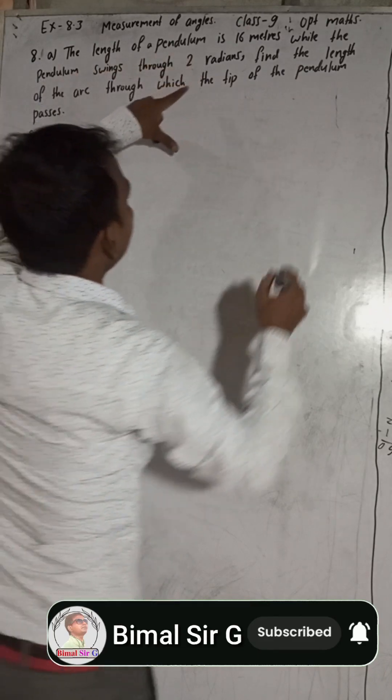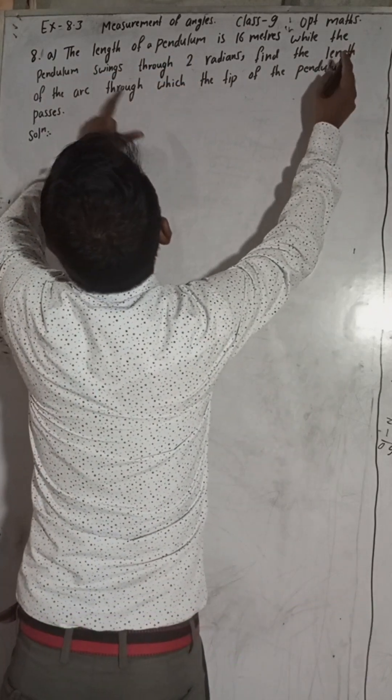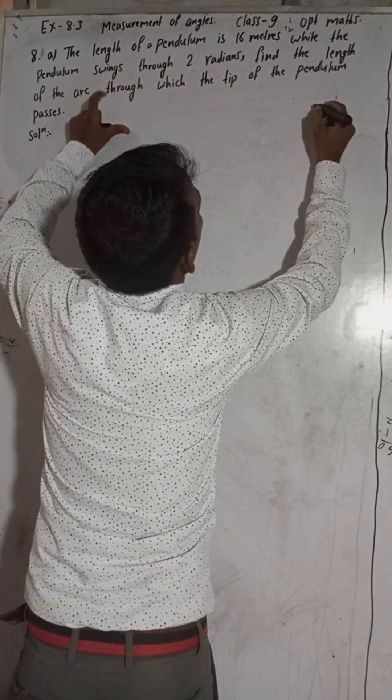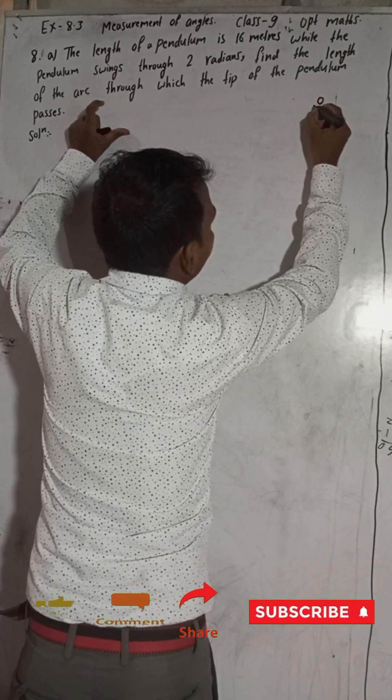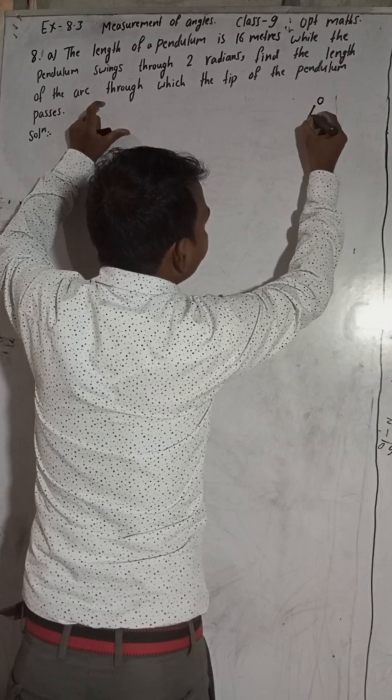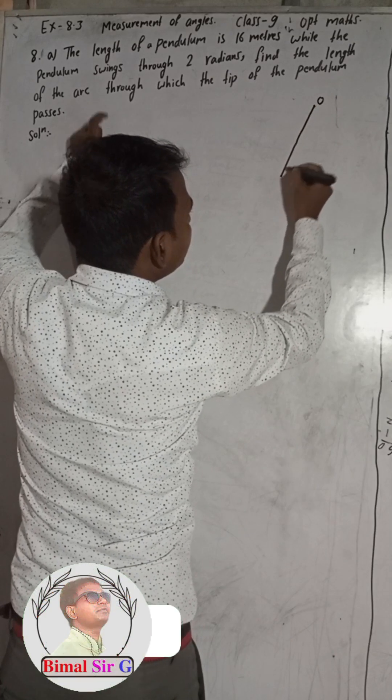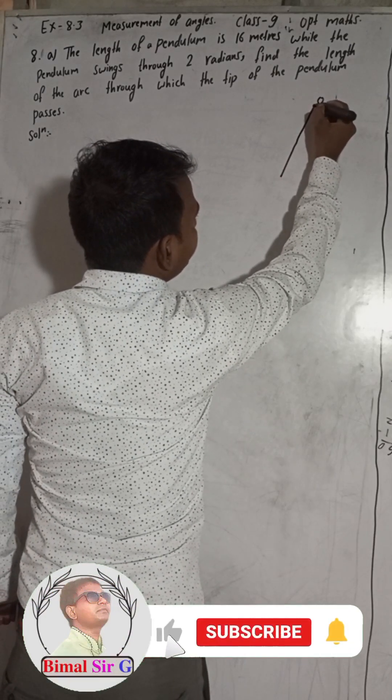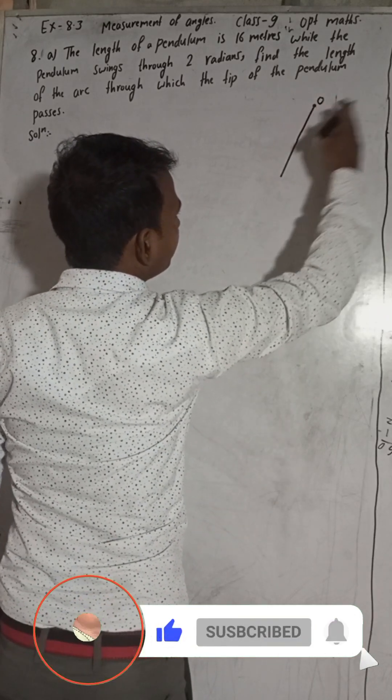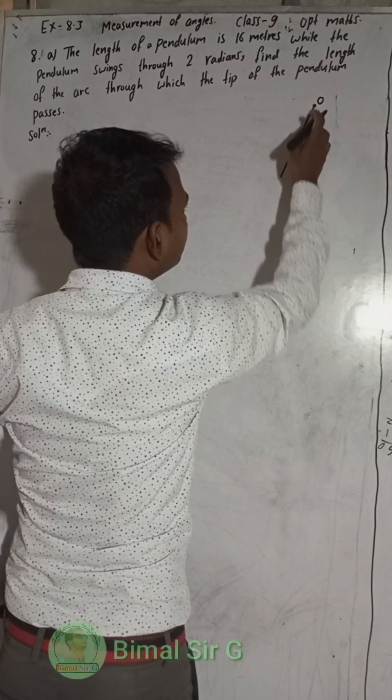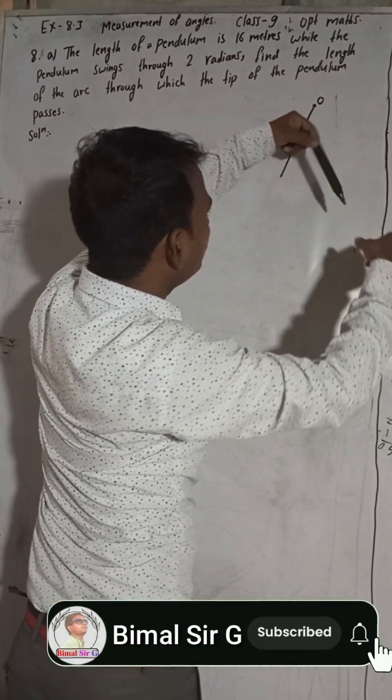The length of the pendulum is 16. While the pendulum swings through - so pendulum means from this point O, this pendulum will swing this way, from here it will swing this way.